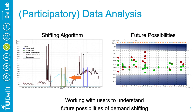Then we confronted the participants with a similar visualization of their own data. This time, we used our demand-shifting algorithm to highlight when they had run their washing machine — the red dots — and also when it would have been the greenest time on that given day, shown as green dots on the visualization.